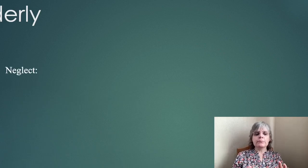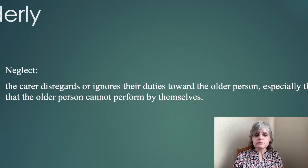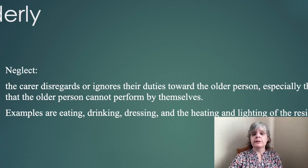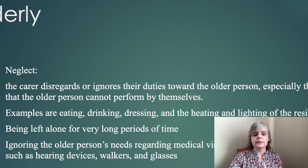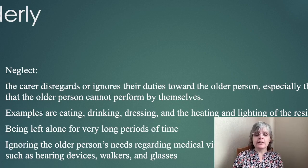There's also neglect, which is very close to abuse and extremely bad. The carer — the person responsible for the older person — disregards or ignores their duties, especially when the older person cannot perform tasks by themselves. For example, that could be eating, drinking, dressing, and the heating and lighting of the place where they live. They could be left alone for long periods of time, and the carer could ignore the older person's needs regarding medical visits, medical tools and equipment — such as hearing devices, walkers (in Scotland we call these zimmers), and glasses.